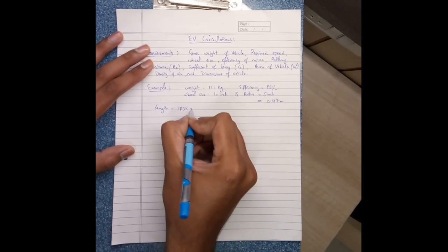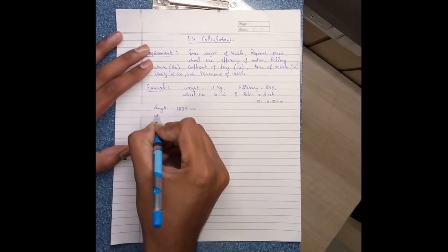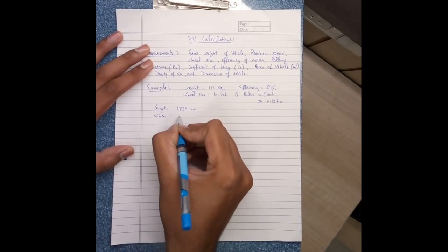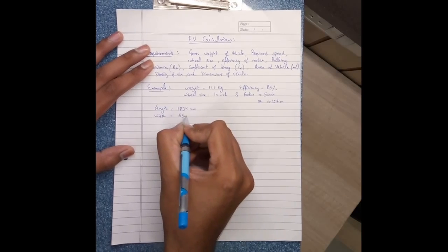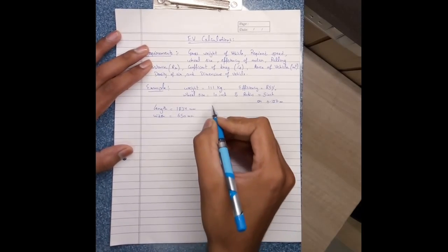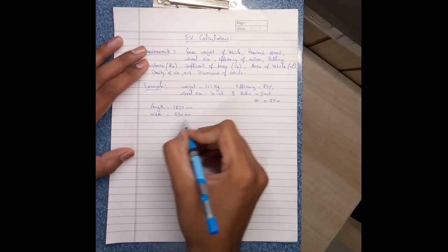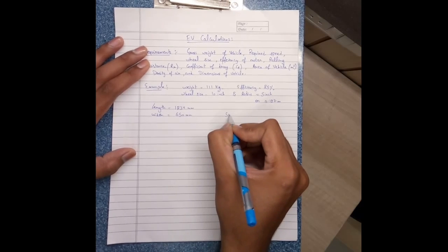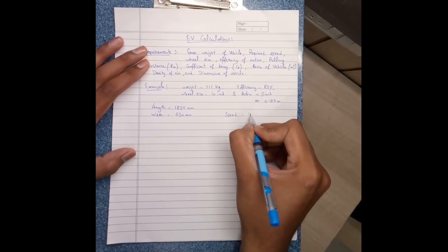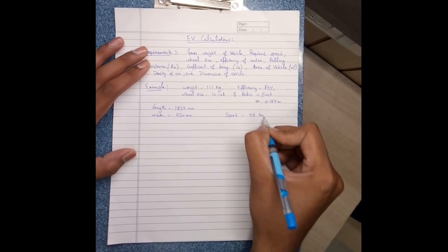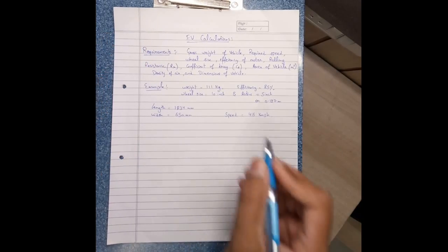1834 mm, width 650 mm, and next is speed 45 kilometer per hour. So these are the required values.